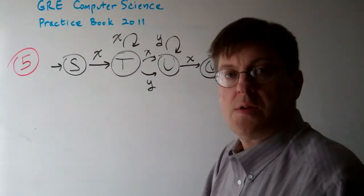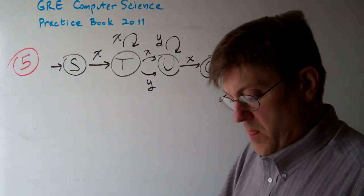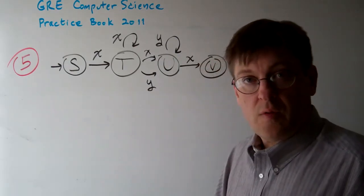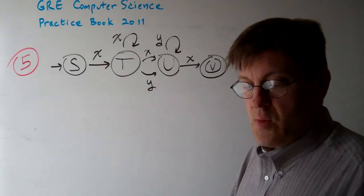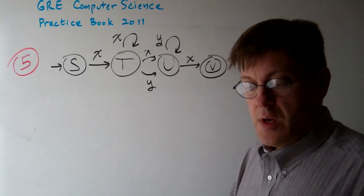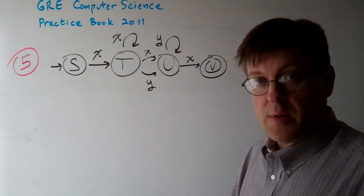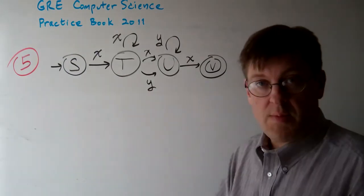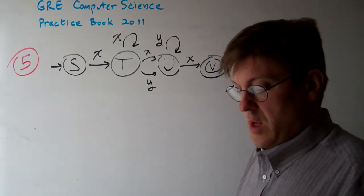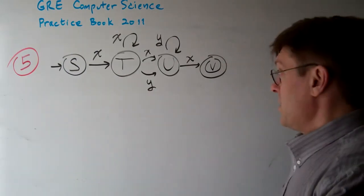Question 5. We want to find out which of the following grammars over alphabet X, Y generates the language recognized by the automaton above. This is the same automaton as in question 4. We can go through it in a similar fashion here.